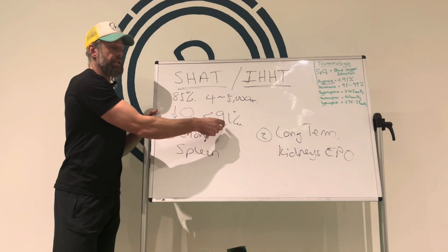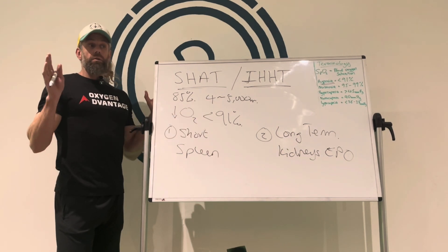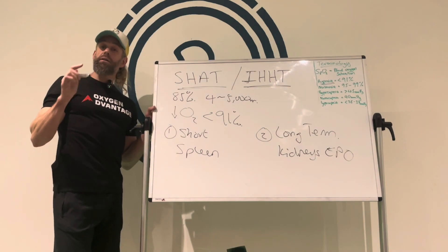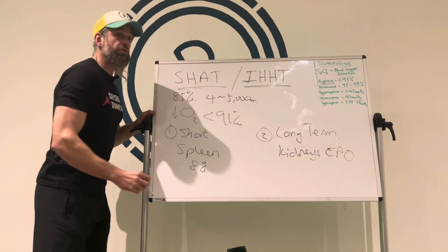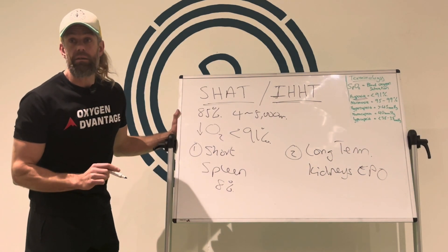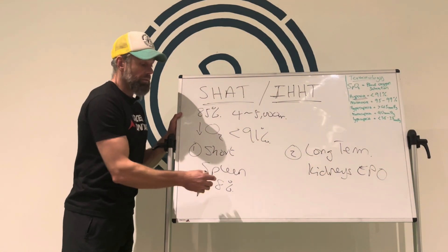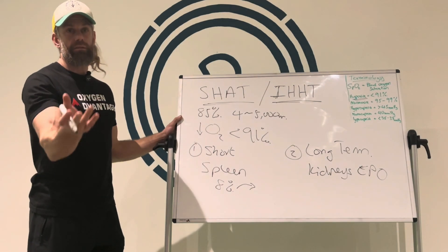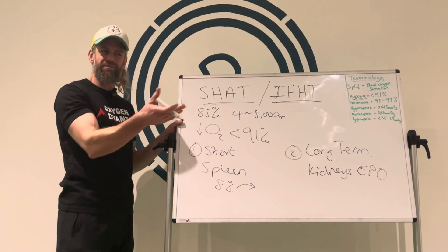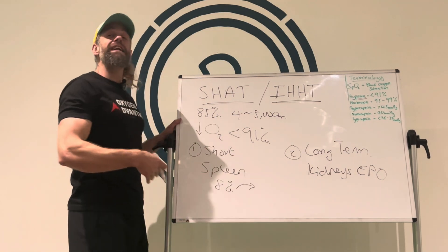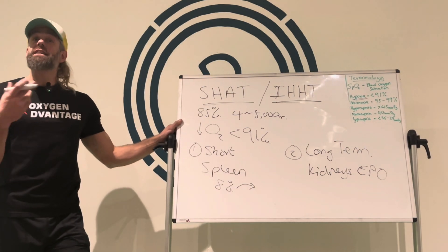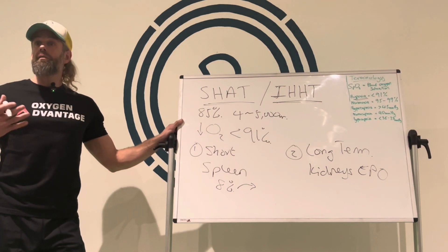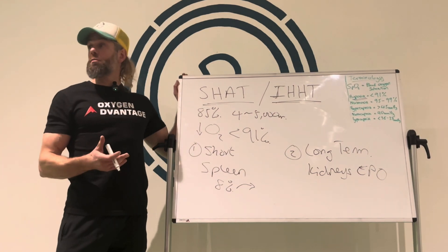So when I'm doing my breath holding and it starts to go down low, my body starts going: 'need a bit of help on the oxygen level.' And the spleen goes: 'don't worry, I can help — because I hold about 8% additional red blood cells just in case of emergencies.' Remember, oxygen is so important to life. So it contracts and releases some additional red blood cells, giving you a greater oxygen carrying capacity of the blood.